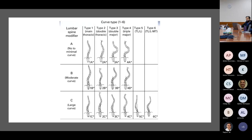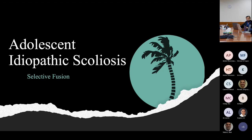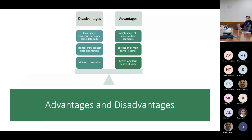This classification helps predict surgical intervention. Regarding selective fusion: the advantages are that we maintain lumbar spine motion segments, get correction of the main thoracic curve, and theoretically achieve better long-term spinal health. The disadvantages are that you could get an incomplete correction, resulting in a truncal shift and greater decompensation, which might then lead to an additional procedure.